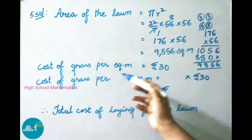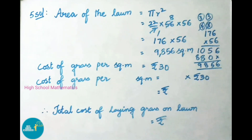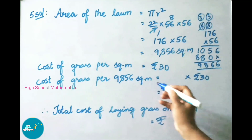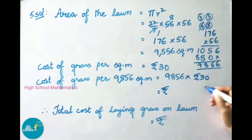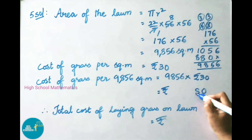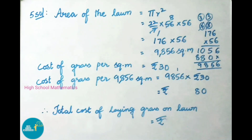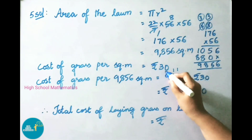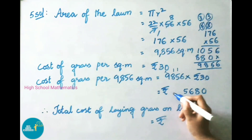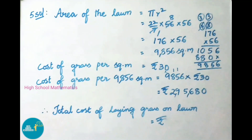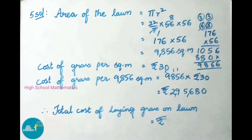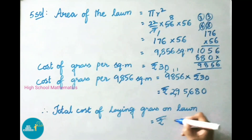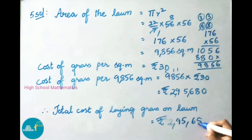They have given the cost of grass per square meter is 30 rupees. Therefore, the cost of grass for 9,856 square meters is 9,856 into 30. Write down 0, then multiply by 3: 3 sixes are 18, 8 carry 1; 3 fives are 15 plus 1 is 16, 6 carry 1; 3 eights are 24 plus 1 is 25, 5 carry 2; 3 nines are 27 plus 2 is 29. Therefore, the total cost of laying grass on the lawn is 2,95,680 rupees.